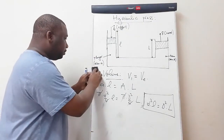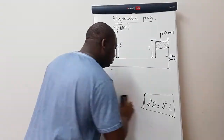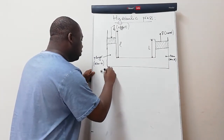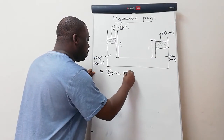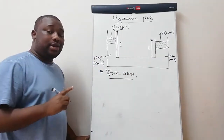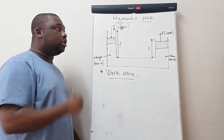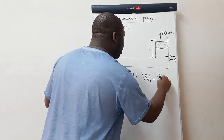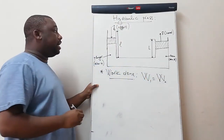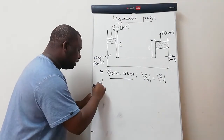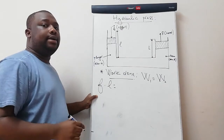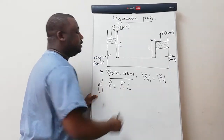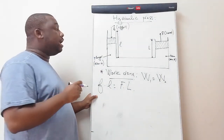For work done: the work done on the plunger equals the work done on the ram, so W1 = W2. Work done on the plunger equals the force on the plunger times the stroke length of the plunger. Work done on the ram equals the load on the ram times the stroke length of the ram.